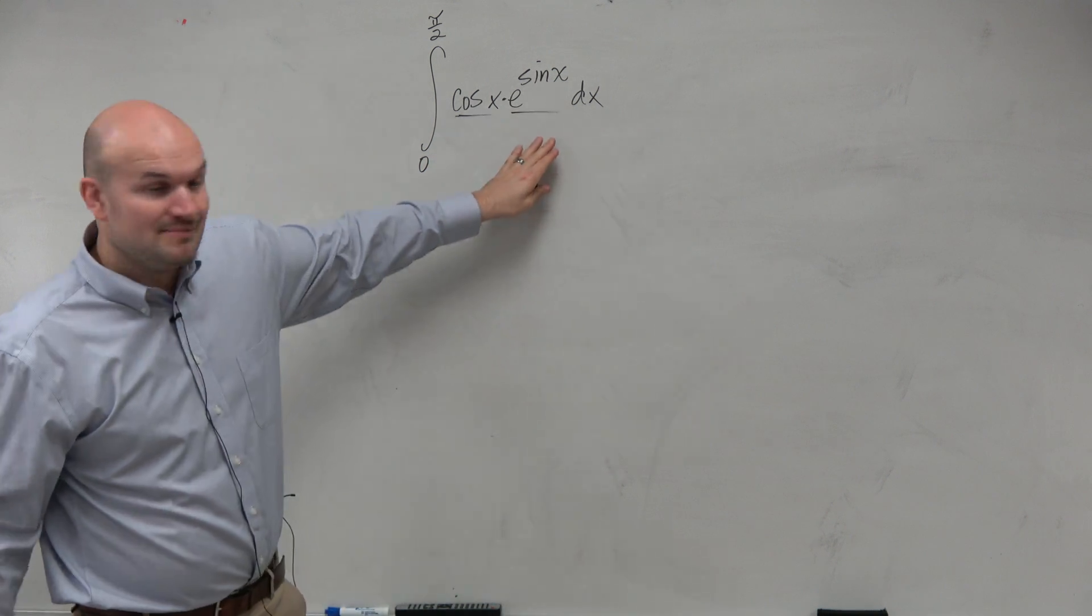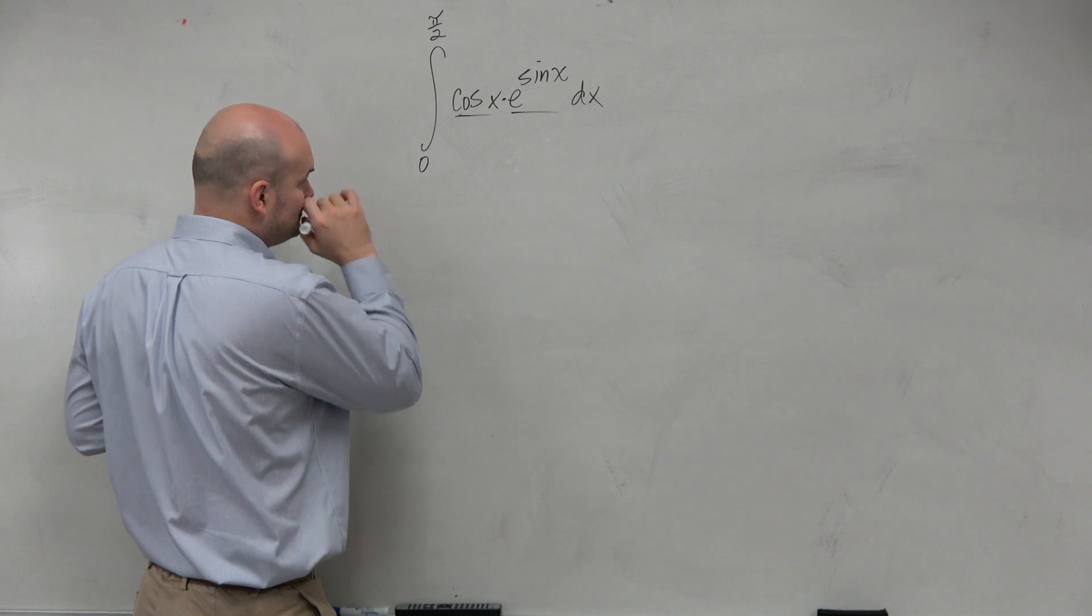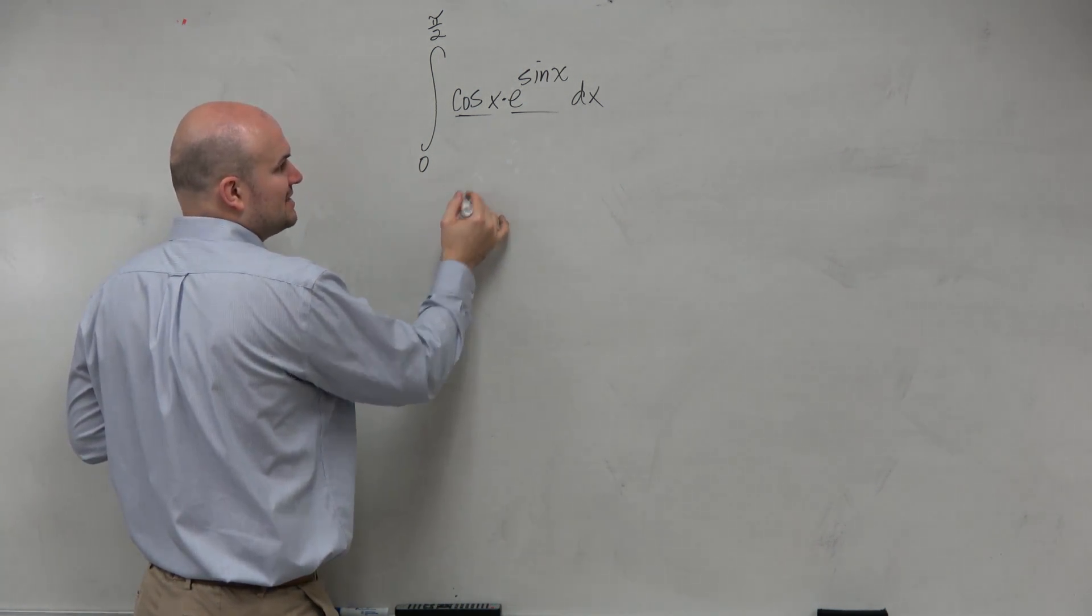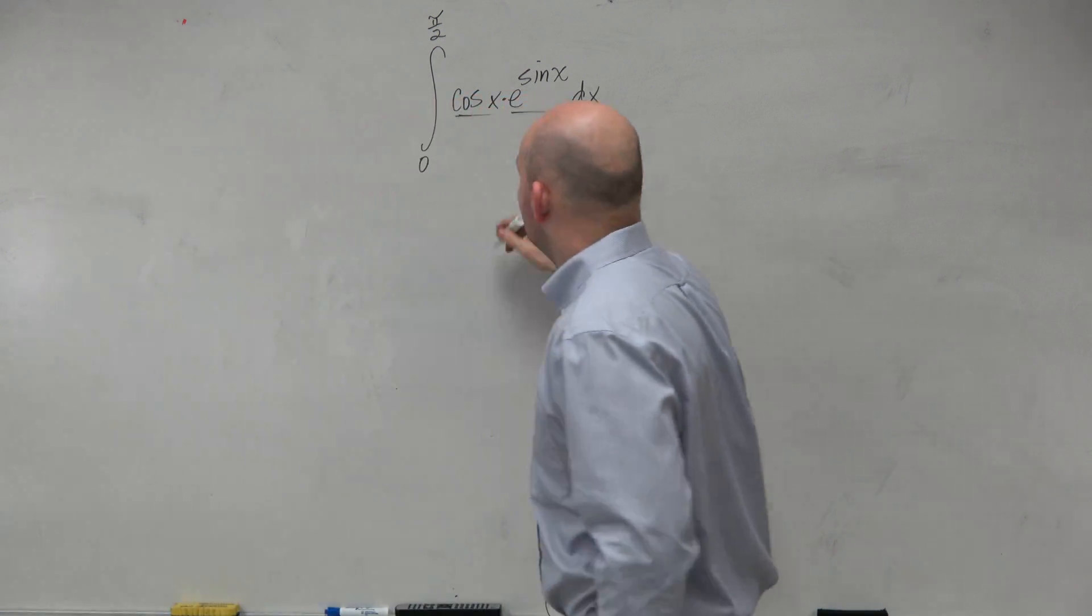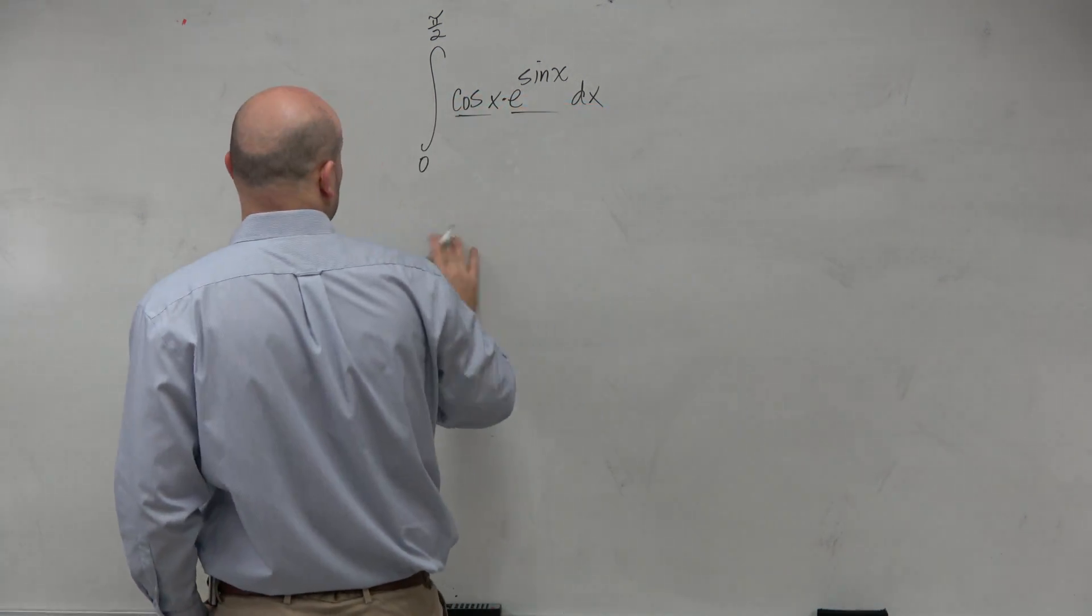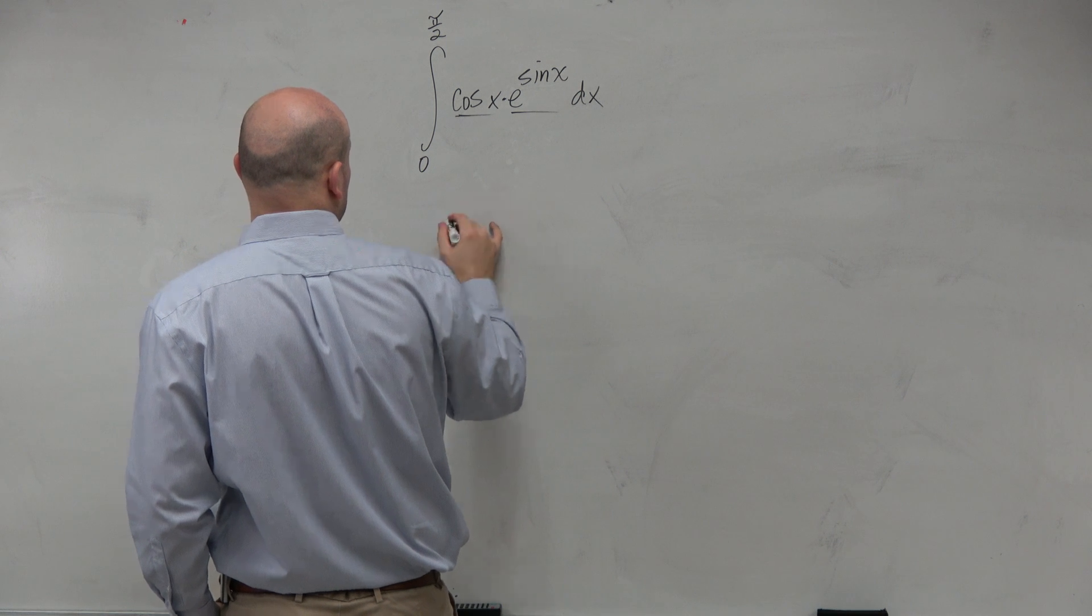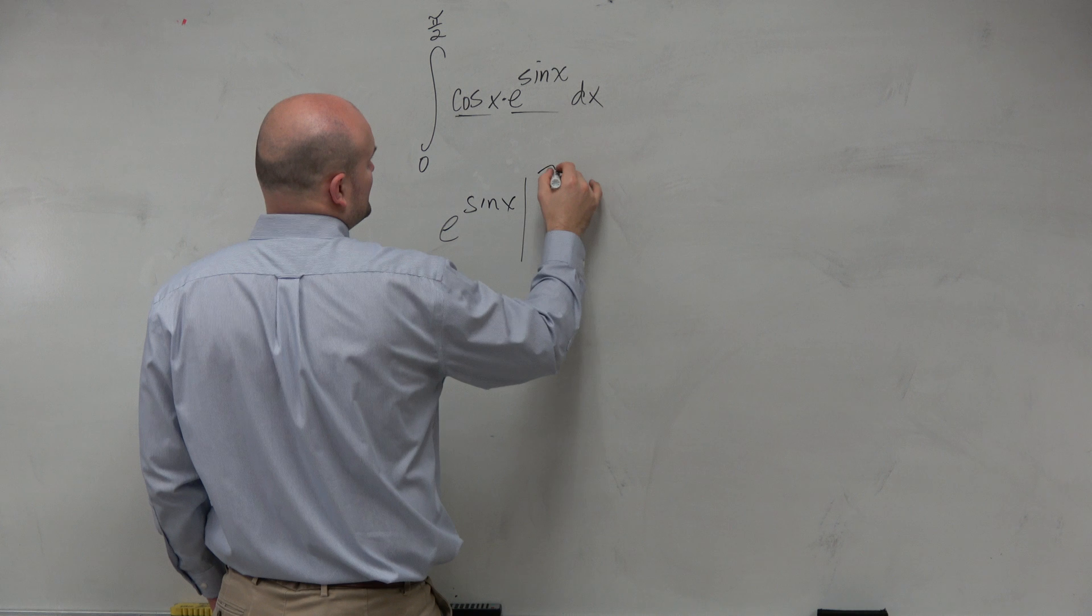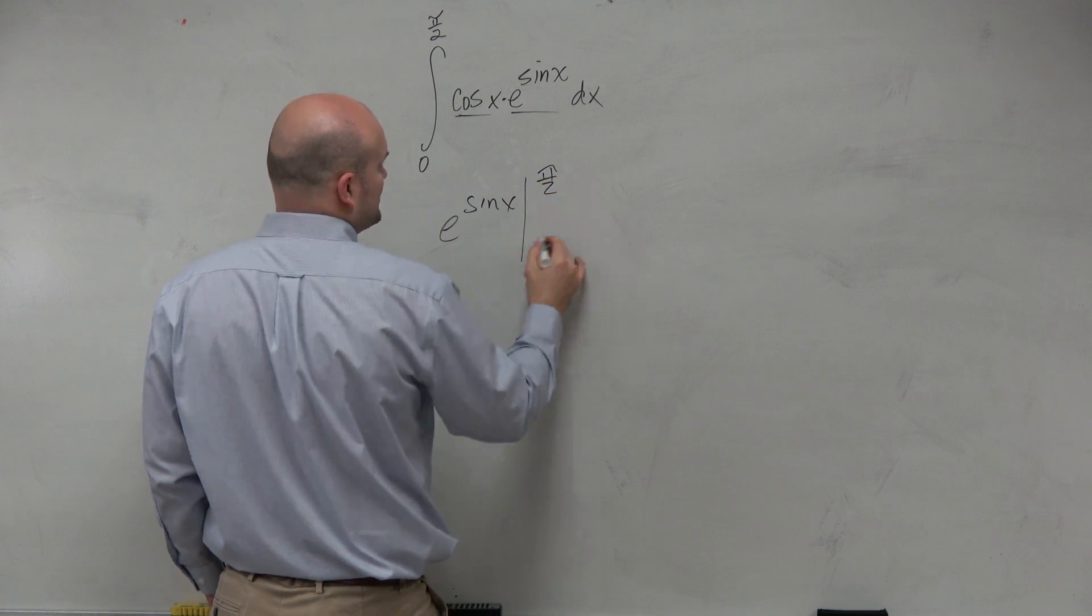Is cosine the derivative of sine of x? Yeah. So I know that immediately to integrate this, if I was going to integrate in this case, then my integral would be e to the sine of x. And then I just need to integrate from pi halves to 0.